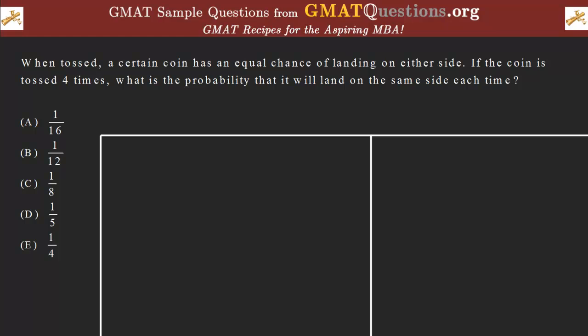Hi, this is Dakarazu. We have here a GMAT probability question. Let's read the question. When tossed, a certain coin has an equal chance of landing on either side. If the coin is tossed four times, what is the probability that it will land on the same side each time?